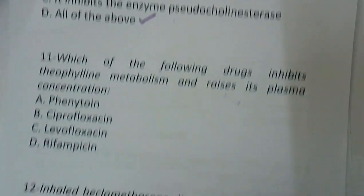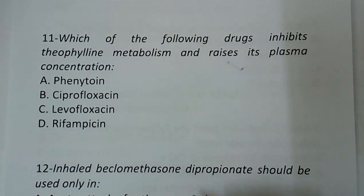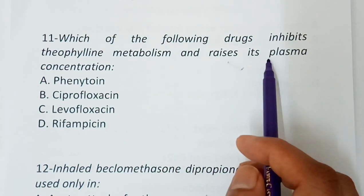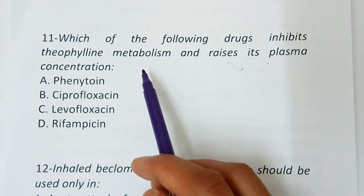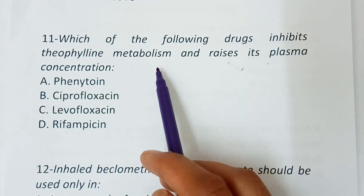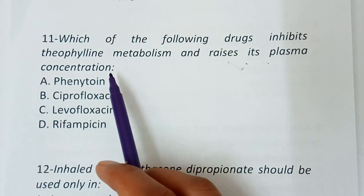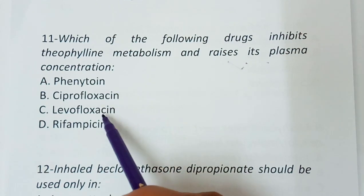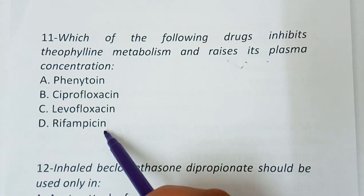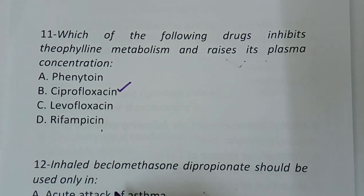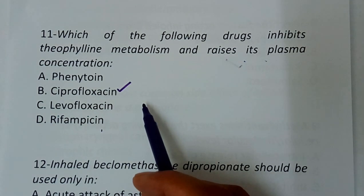Question number eleven: Which of the following drugs inhibits theophylline metabolism and raises its plasma concentration? Options are phenytoin, ciprofloxacin, levofloxacin, or rifampicin. The correct answer is ciprofloxacin. This was already studied in the general pharmacology section under metabolic enzyme inhibitors.